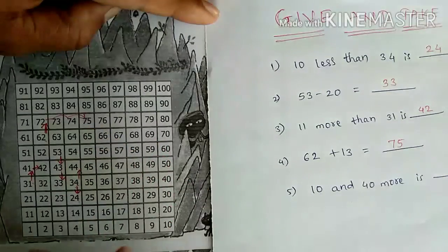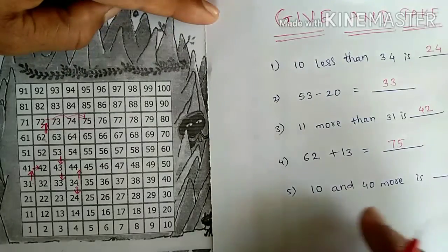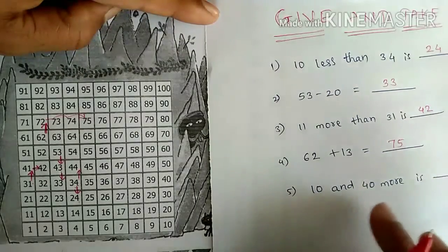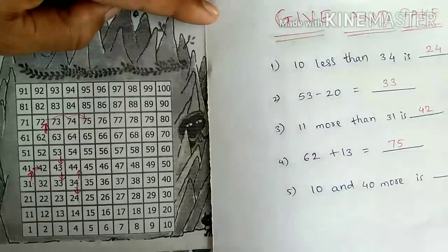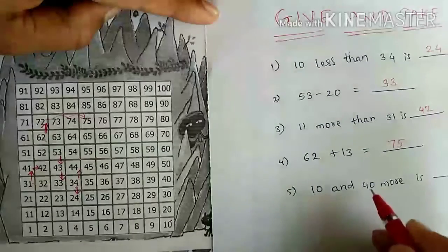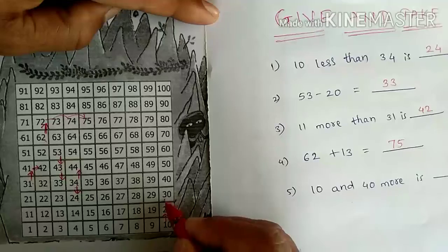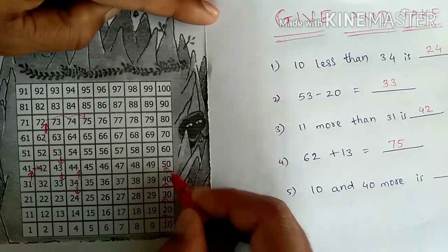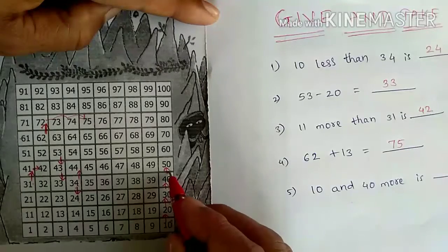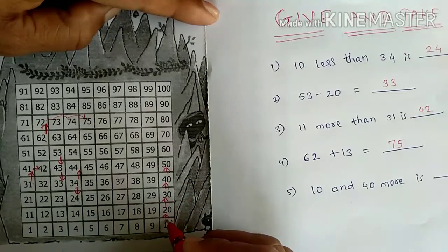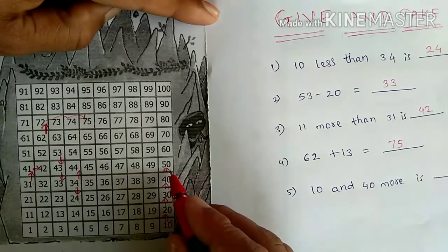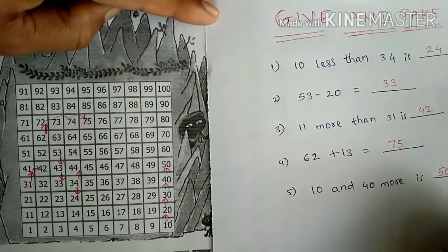Next: 10 and 40 more. We can see 10 is here. 40 more means we move 4 steps forward — each step adds 10. So step by step: 10, 20, 30, 40 more added. We moved 4 steps forward, because one step consists of 10 numbers. So the answer is 50. In this way, we find the answers using Kitu's house number table.